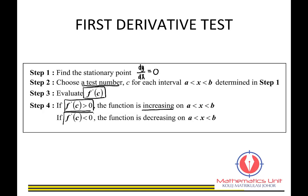If f prime c is less than zero, the function is decreasing. So if you see a positive sign first (increasing) then a negative sign (decreasing), you have a maximum point. Conversely, if you see a negative sign first (decreasing) then a positive sign (increasing), you have a minimum point. These are the two possibilities you might encounter.